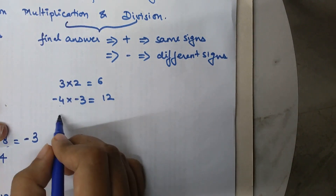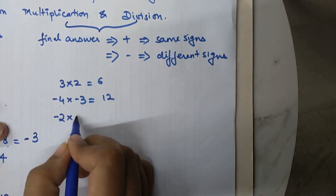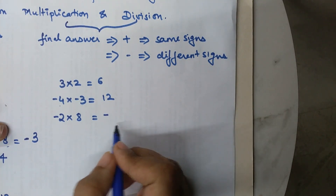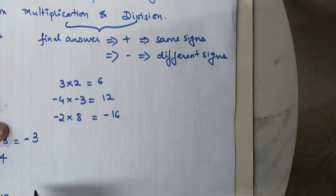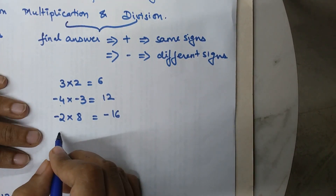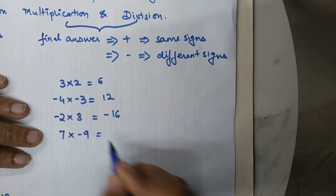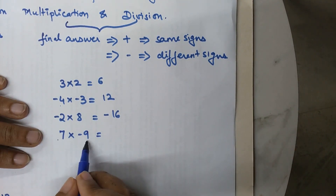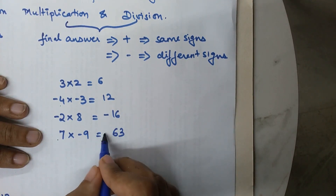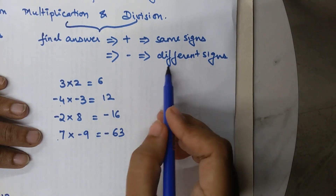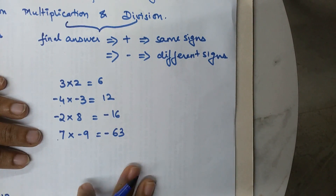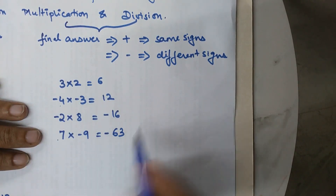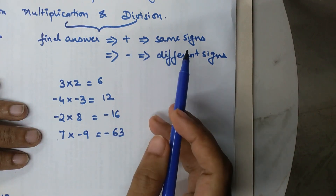Now, negative 2 times positive 8: different signs, so the answer is automatically negative, and 2 times 8 is 16, giving negative 16. Similarly, 7 times minus 9: 7 is positive and 9 is negative — different signs — so 7 times 9 is 63 and the answer is negative 63. Note that for multiplication and division, the sign does not depend on the bigger number but only on whether the signs are the same or different.